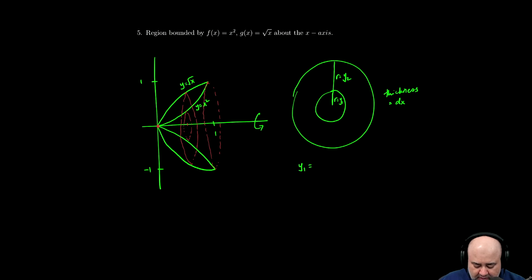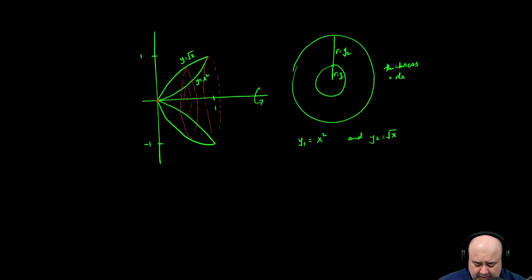So y sub 1 will be x squared, and y sub 2 will be root x. Now, we can use washer here to do things very quickly.